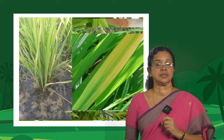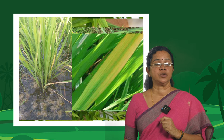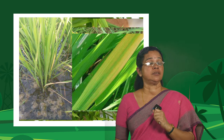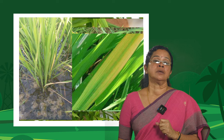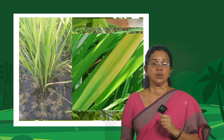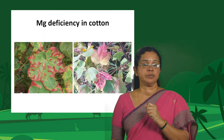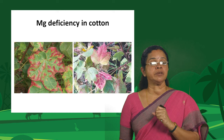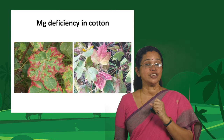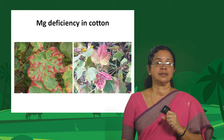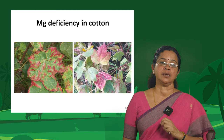In upland rice, after heavy showers in sandy soils, magnesium deficiency can appear. In cotton, magnesium deficiency appears as reddish coloration in the leaves — a pigmentation formation that makes it slightly different from the typical intervenal chlorosis pattern seen in other crops.